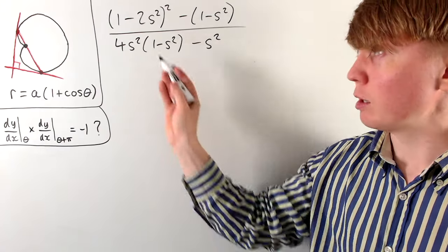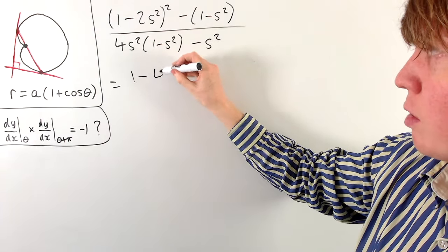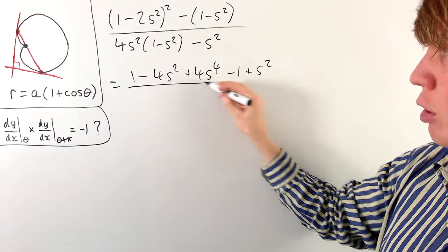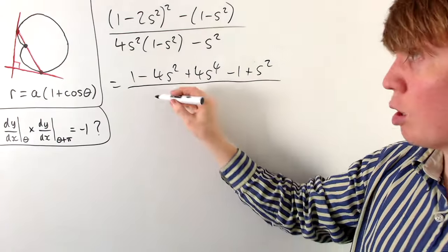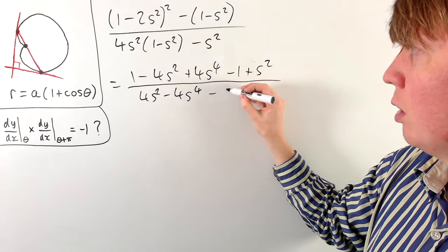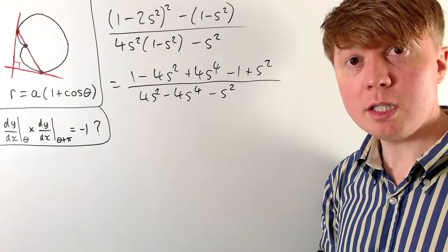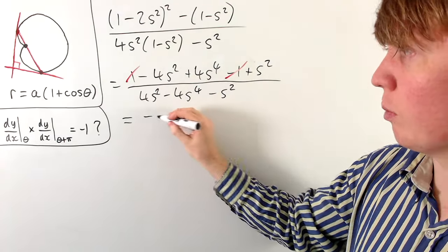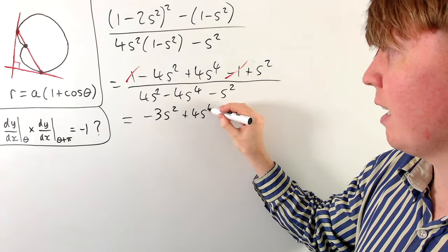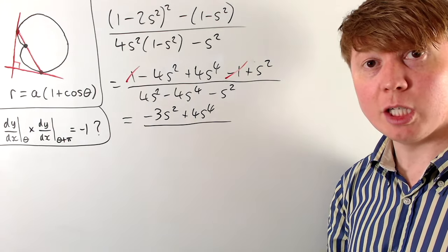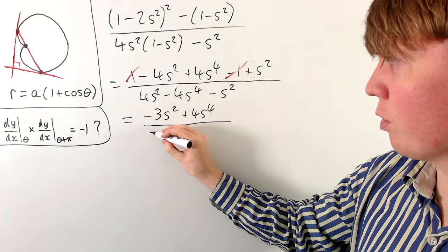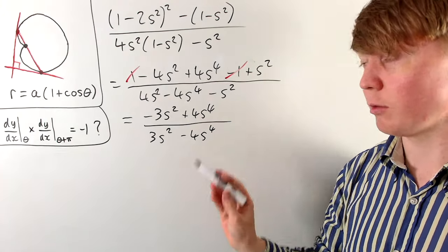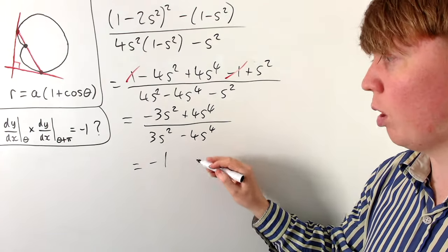Expanding the numerator: (1 − 2s²)² = 1 − 4s² + 4s⁴, so the full numerator is 1 − 4s² + 4s⁴ − 1 + s² = −3s² + 4s⁴. Expanding the denominator: 4s² − 4s⁴ − s² = 3s² − 4s⁴. The numerator is exactly the negative of the denominator, so the product of the gradients equals −1, confirming the tangents are perpendicular.